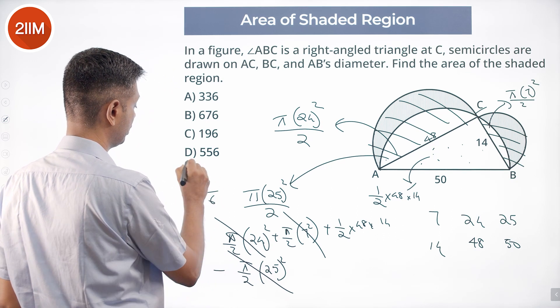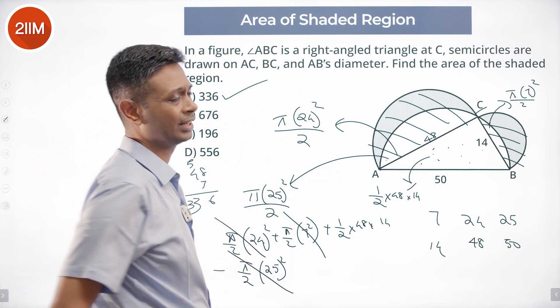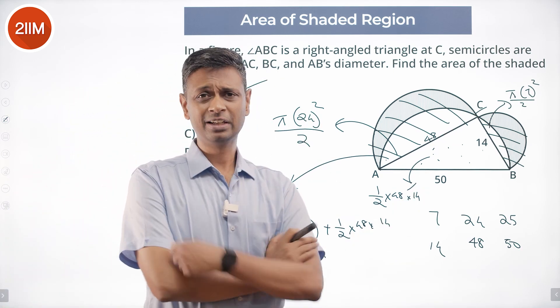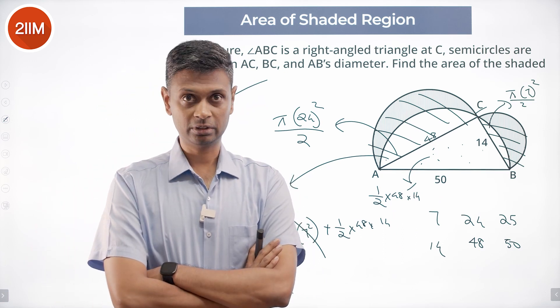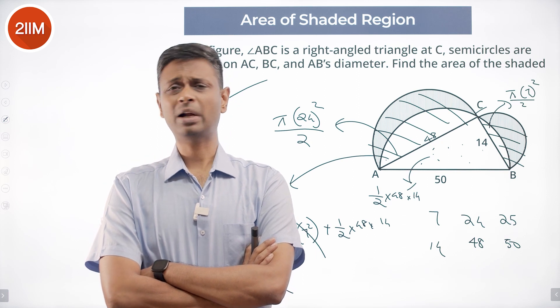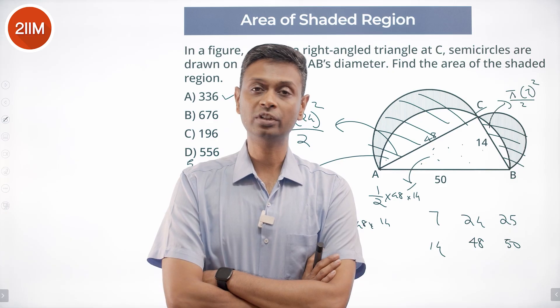Excellent question. That's a standard template: the two semicircles plus the triangle minus the big semicircle. That means the whole semicircular part disappears. Effectively, the area of the shaded region is equal to the area of the triangle.